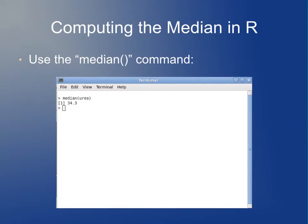To compute the median in R, the command, surprisingly enough, is called median. If I say median urea, I get 34.3, exactly the same median that I got when I computed it manually in the earlier slide.